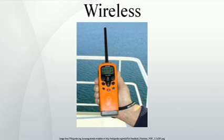It encompasses various types of fixed, mobile, and portable applications, including two-way radios, cellular telephones, personal digital assistants (PDAs), and wireless networking. Other examples of applications of radio wireless technology include GPS units, garage door openers, wireless computer mice, keyboards and headsets, headphones, radio receivers, satellite television, broadcast television, and cordless telephones.